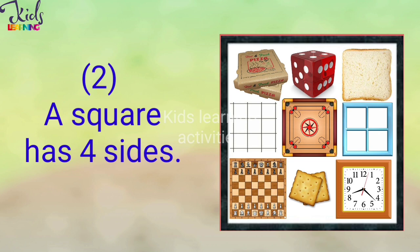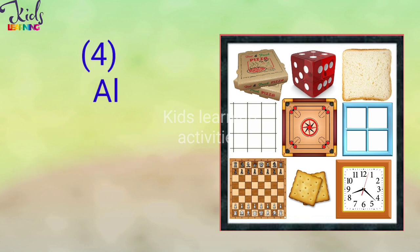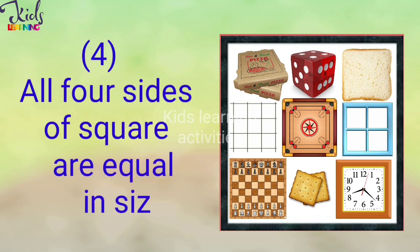A square has four sides. A square has four corners. All four sides of a square are equal in size.